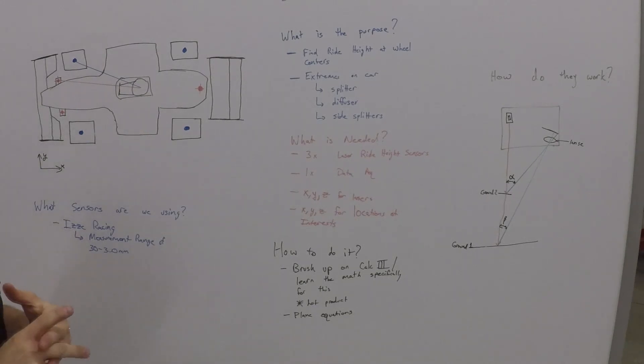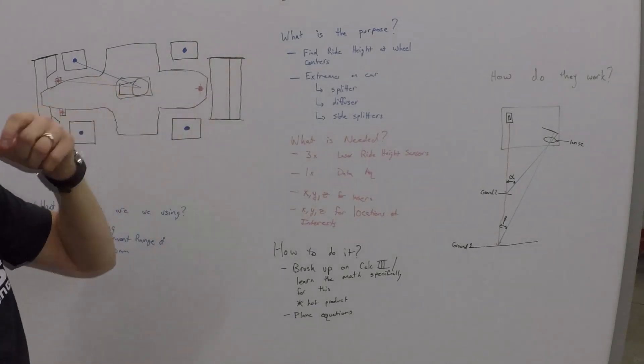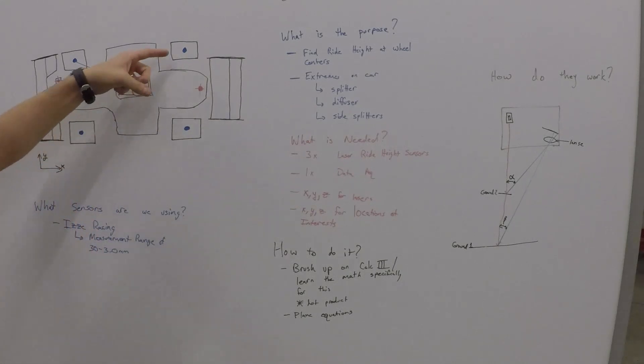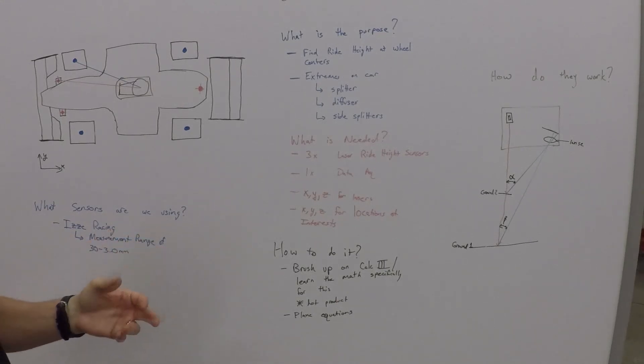What's the purpose? Well, the purpose is to find the ride height at the wheel centers. So you can see that's what's marked in blue is the wheel centers. And then you can also use it to find extremes on the car, splitter, diffuser, side splitters.